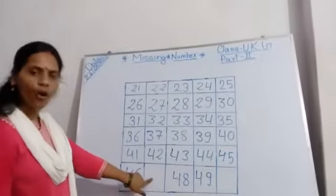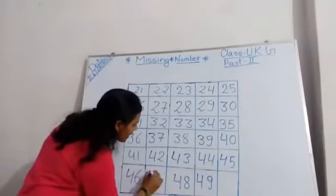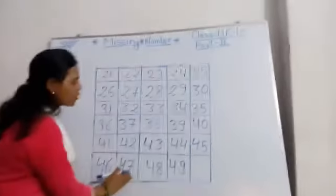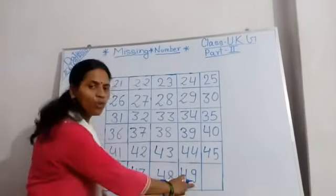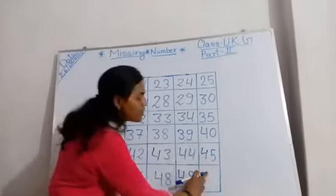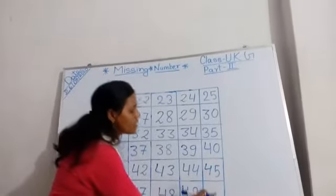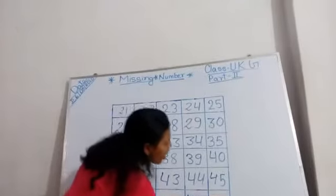45 after 46, 46 after 47. But 47 is missing, write down 47. 47 after 48, 48 after 49, 49 after 50. But 50 is missing, write down 50.